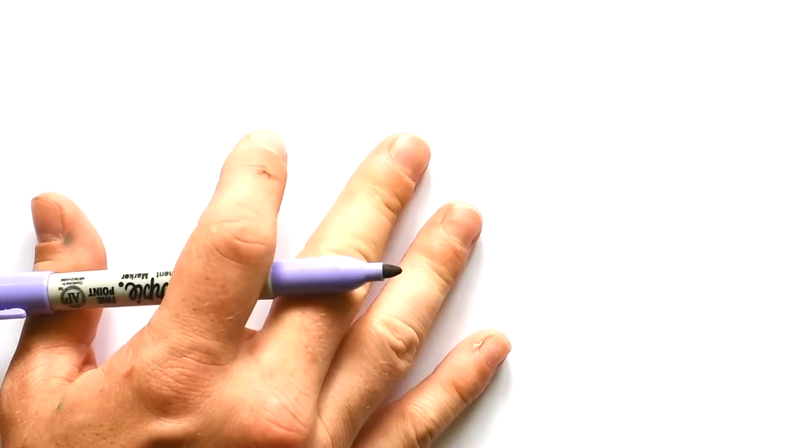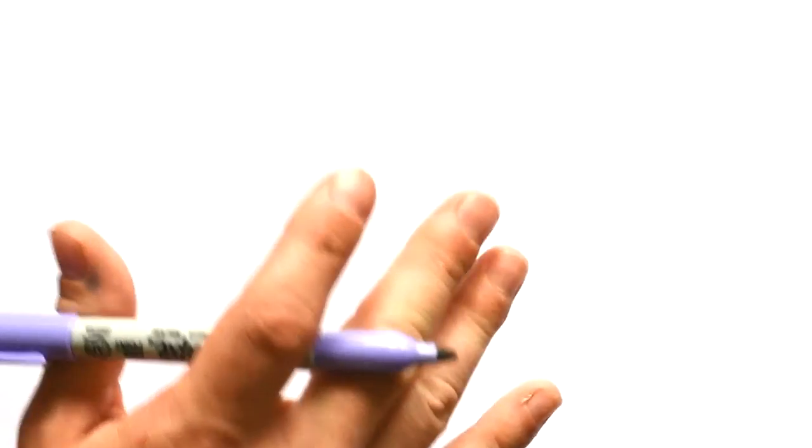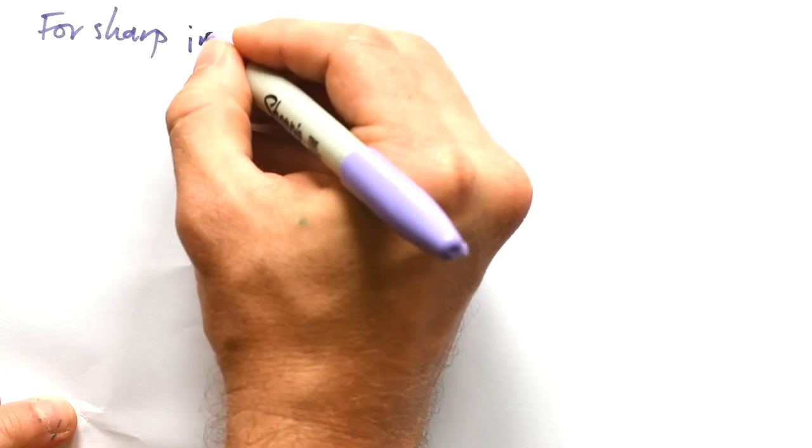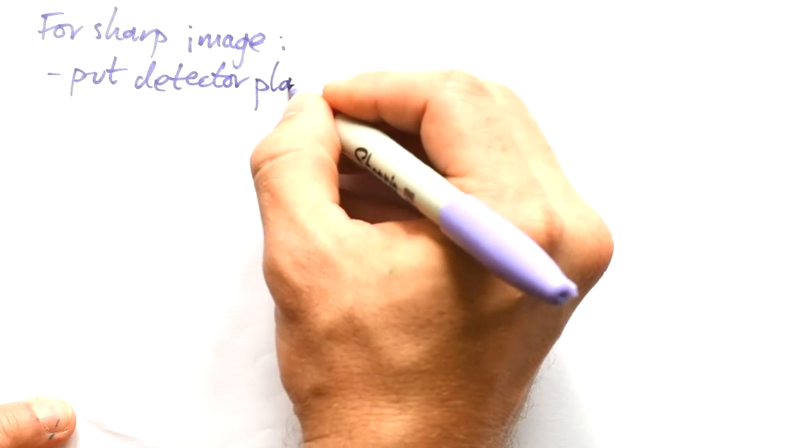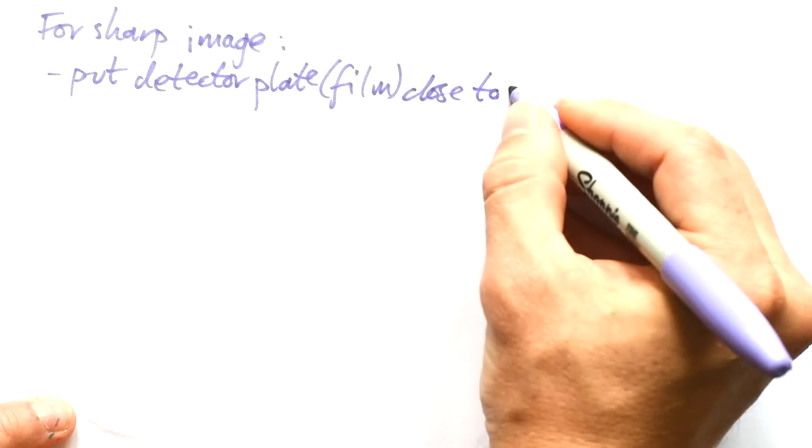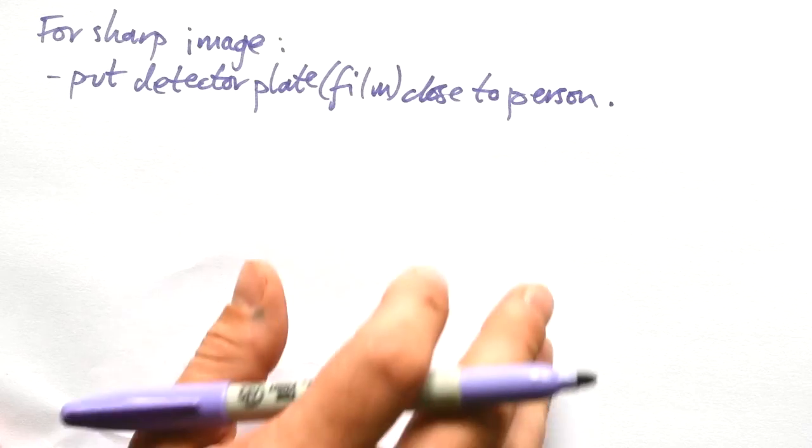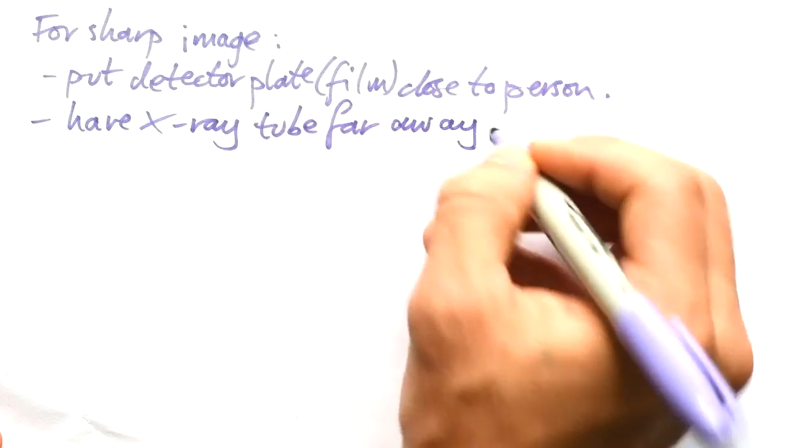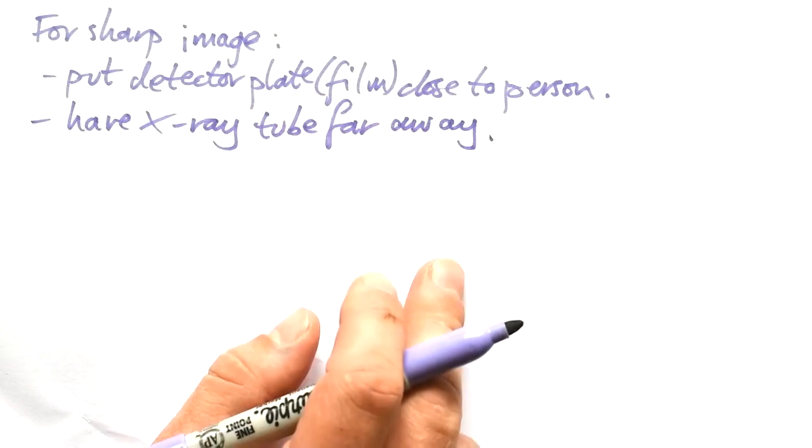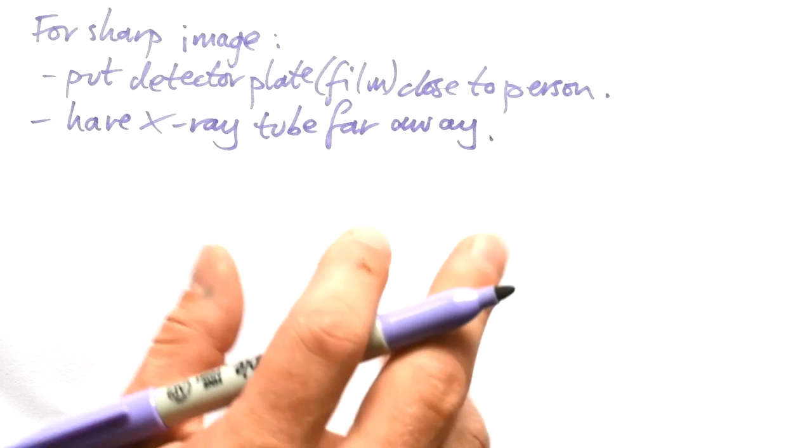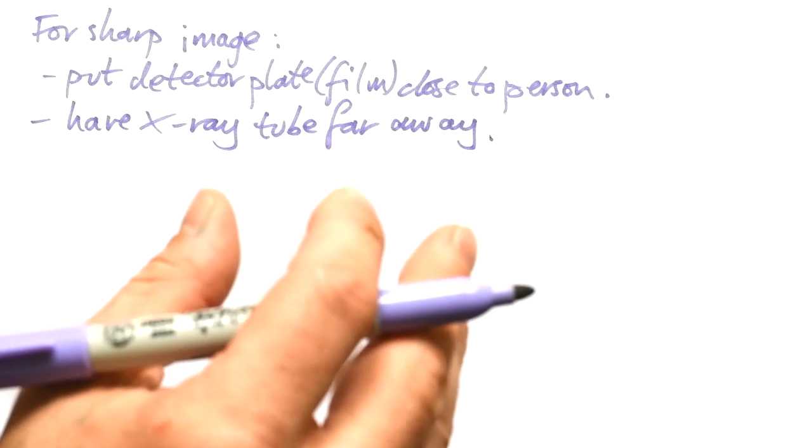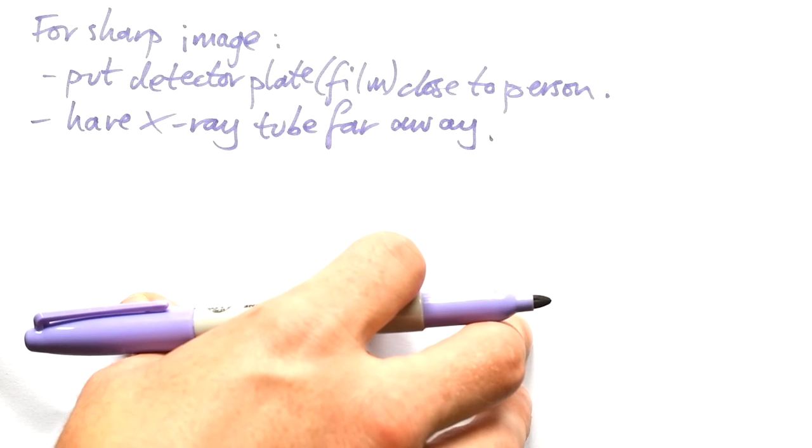Just like when you're taking a picture or taking a video like I am now, you want a nice sharp image, not something blurry. So for a sharp image with a normal X-ray, put detector plates, that is the film, close to the person. Usually they're lying on it. Have the X-ray tube far away. We're not talking about a mile, but we're not talking about a couple of inches either. That way we can be more sure that the rays are going in parallel, not spreading out, not diverging as they go through the person and hit the film.